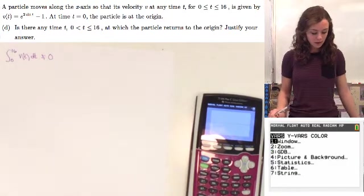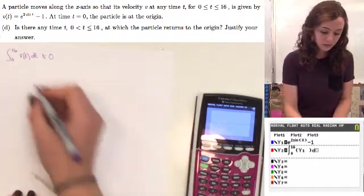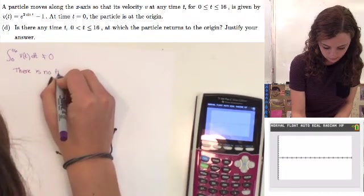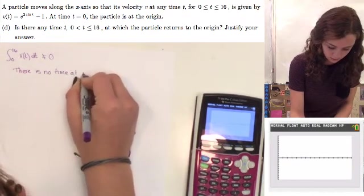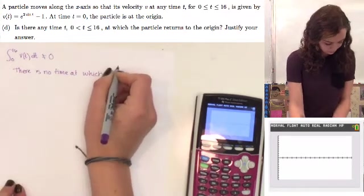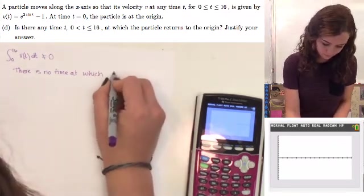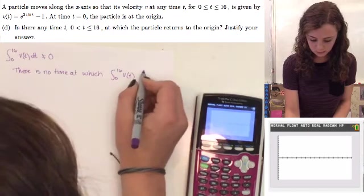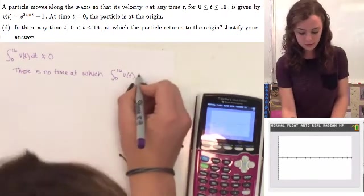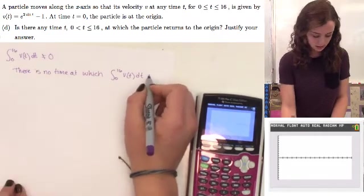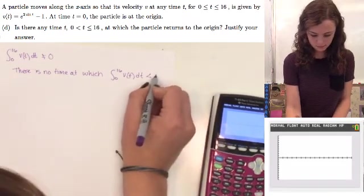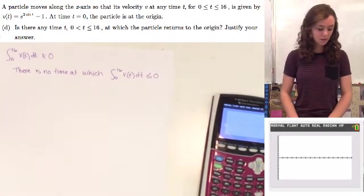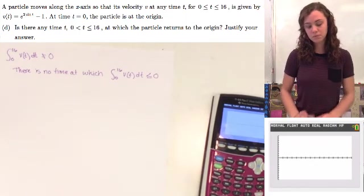And wait for it to graph. And we can see that there is no time at which the velocity between 0 and 16, or the integral of the velocity between 0 and 16, is less than 0. So we know that there is no time at which it will return to the origin.